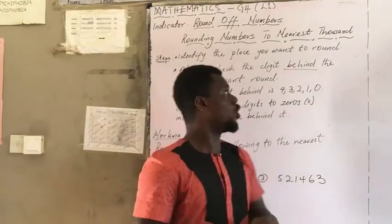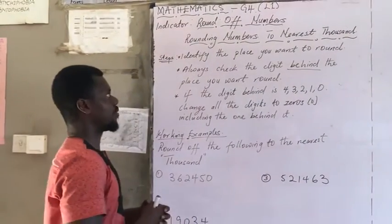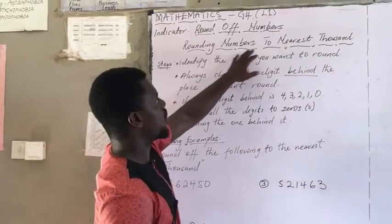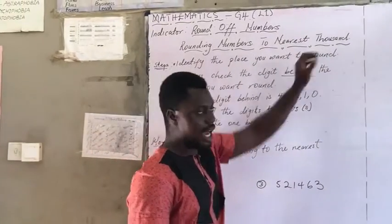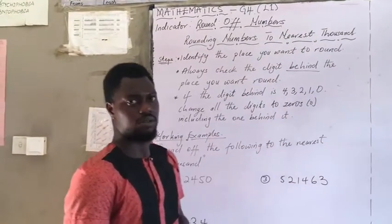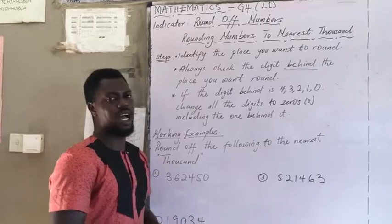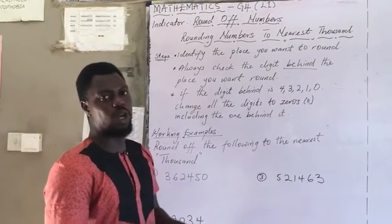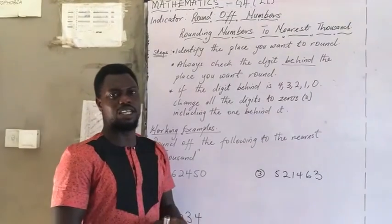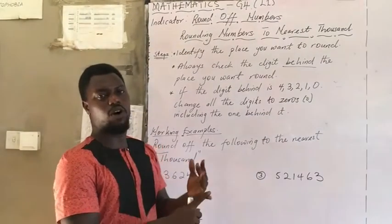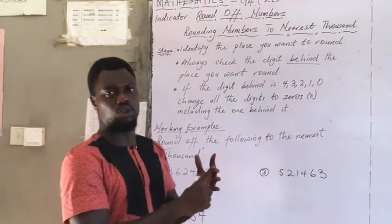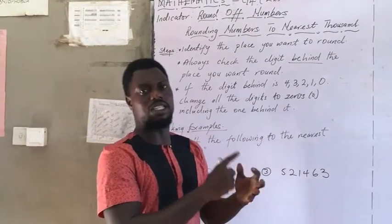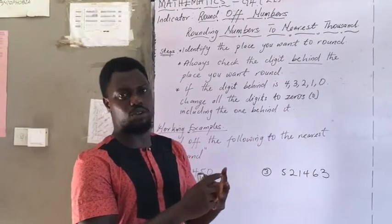So today we are still looking at rounding of numbers to the nearest thousand. At this stage, we are looking at what happens when the number behind where we are rounding is four, three, two, one, and zero.